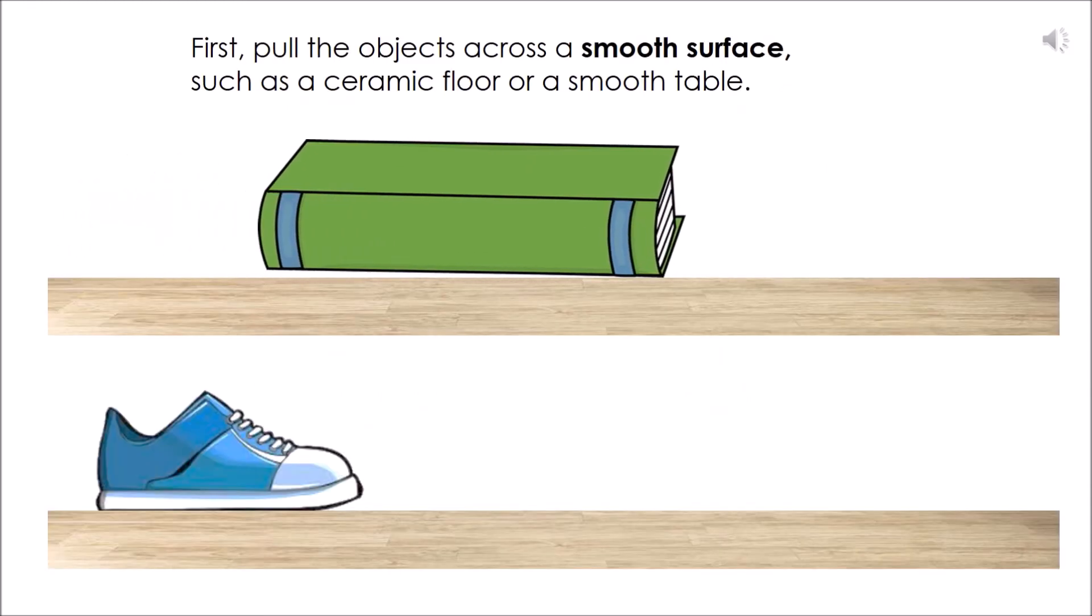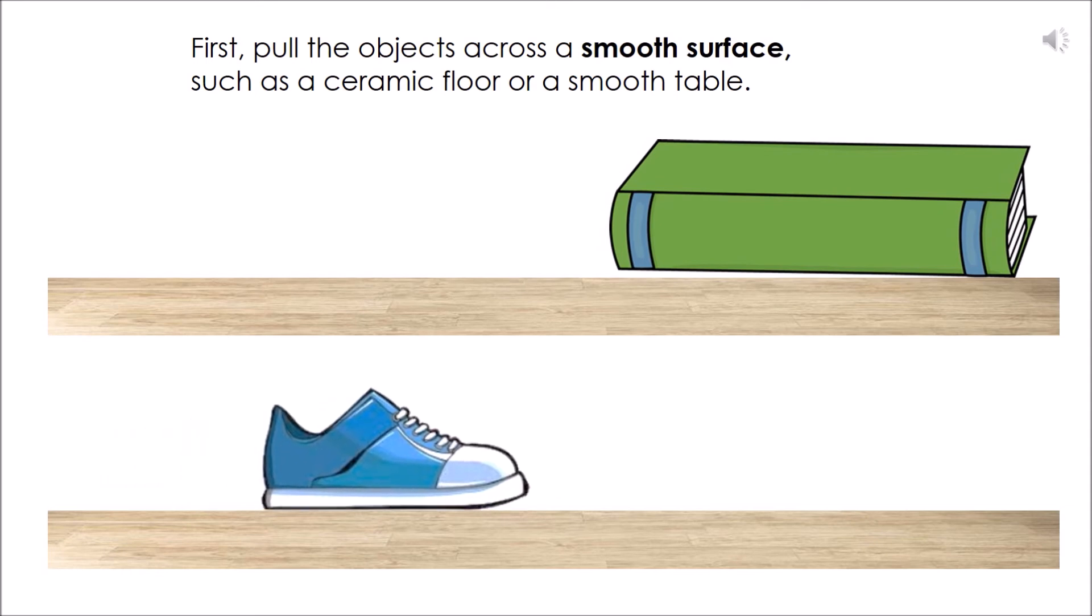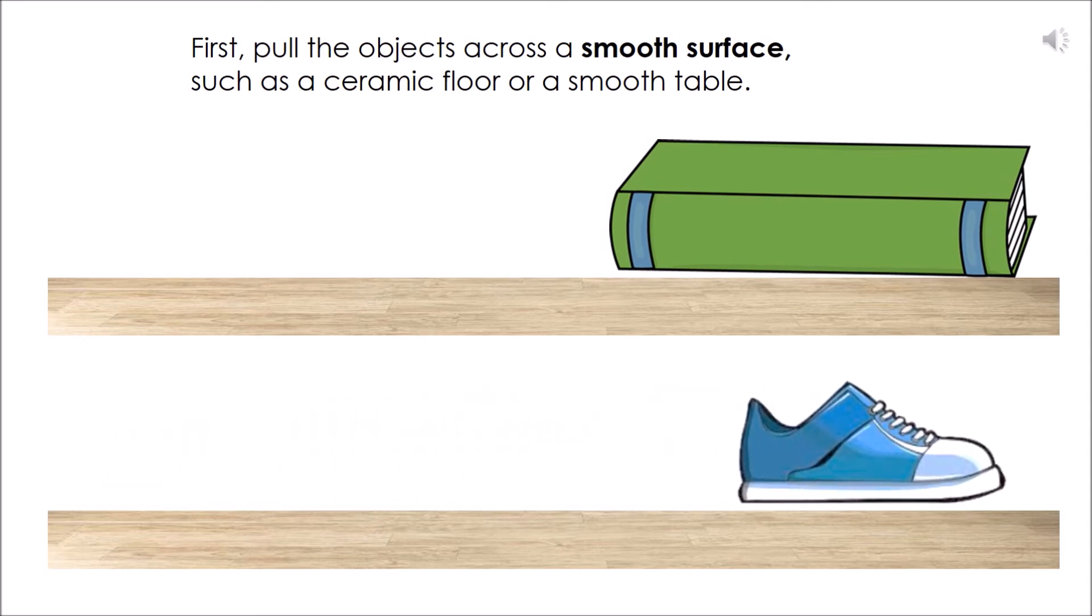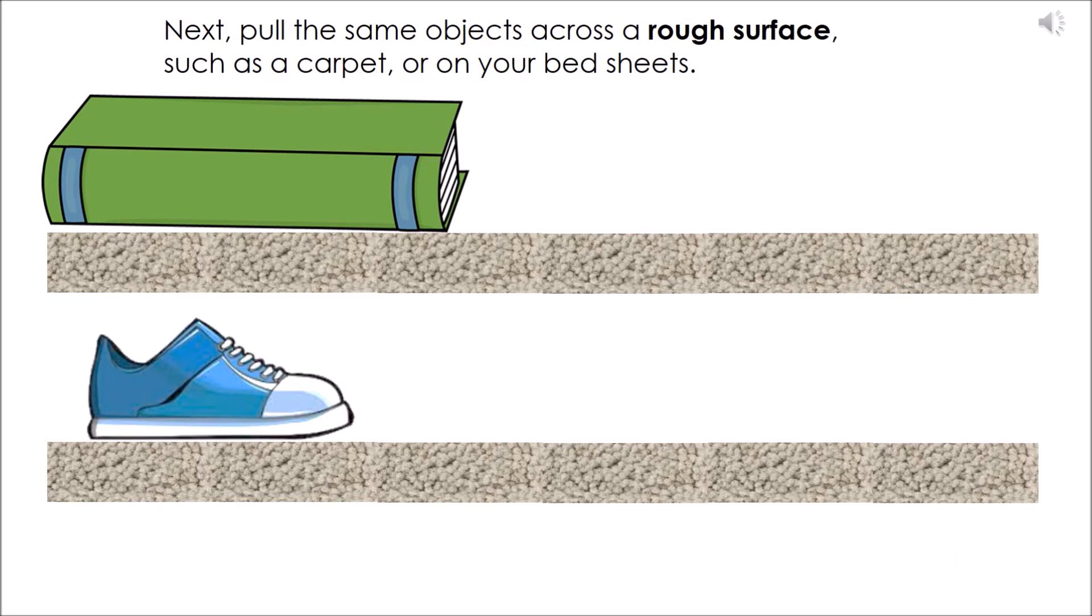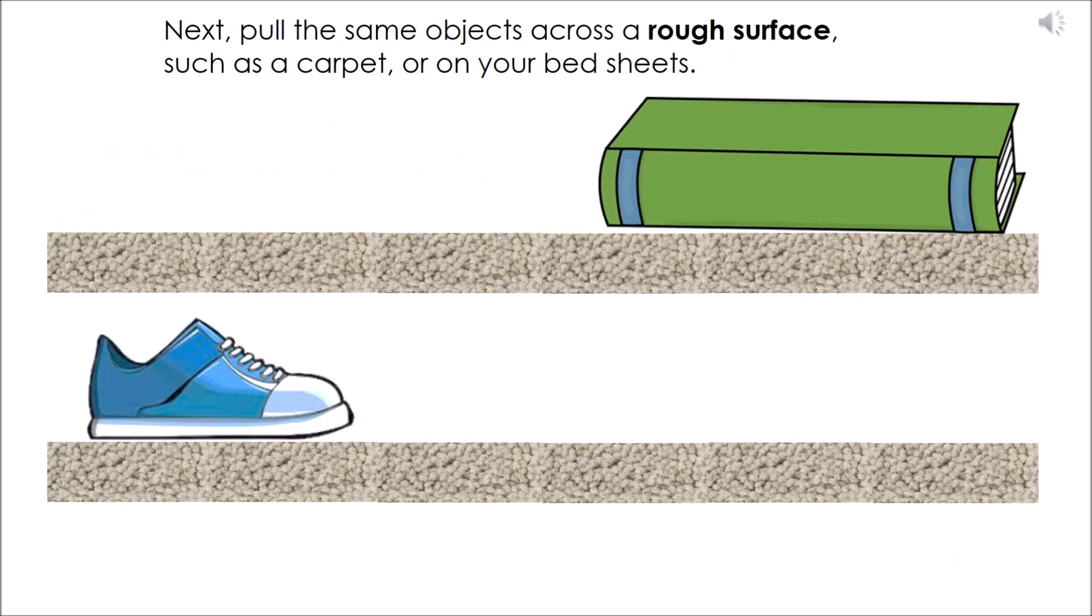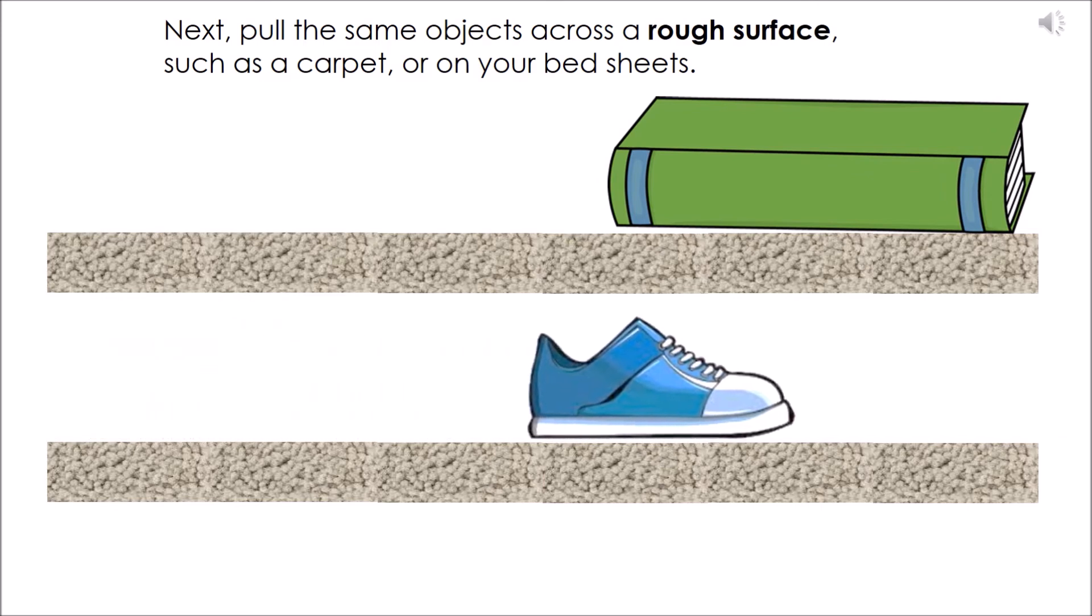First, pull the objects across a smooth surface, such as a ceramic floor or a smooth table. Next, pull the same objects across a rough surface, such as a carpet or on your bed sheets.